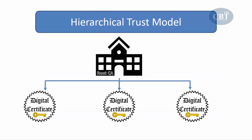The first trust model is the hierarchical trust model. In this model, we have one single hierarchy with one master certification authority called the root. The root signs and issues all digital certificates. For example, when Bob sends a certificate to Alice, Alice says: I don't know your certificate — let me see who issued it. She sees that XYZ certification authority issued Bob's certificate, and that same XYZ also issued hers. So she trusts XYZ, and since Bob's certificate is issued by XYZ, she can trust his certificate too.